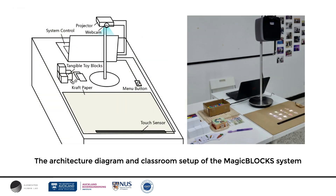Taking design considerations into account, we developed an interactive tabletop system called MagicBlock to support children with autism in practicing social interaction. The system includes four hardware components: an AirBar sensor, a camera, a projector, and a laptop for system control. The software uses OpenCV and Unity.